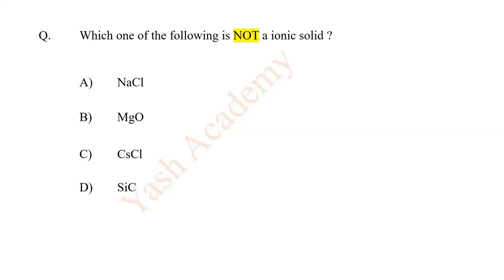Read this question: Which one of the following is not an ionic solid? The answer is D — SiC.